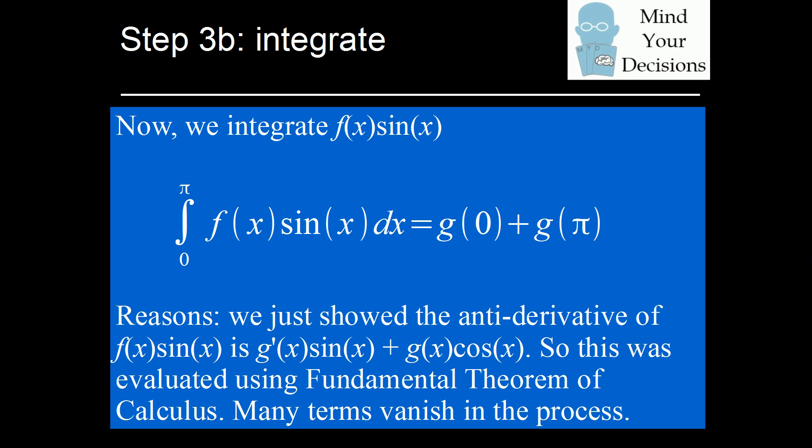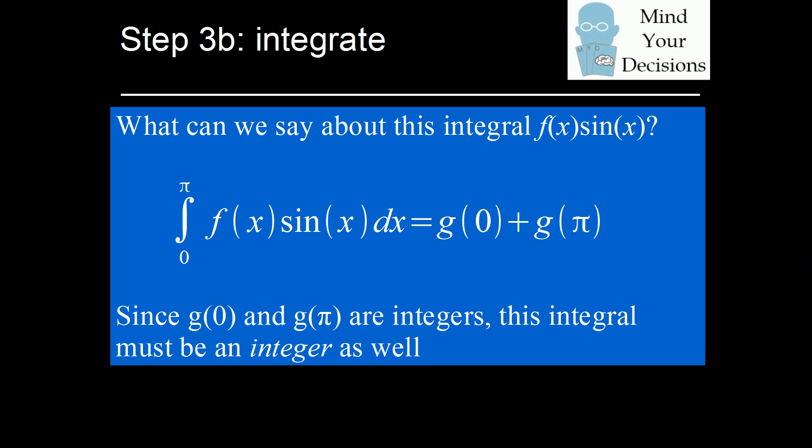So now we can integrate f of x sin x. We have the antiderivative, and we evaluate it at pi and subtract its value at zero. Skipping the algebra, the integral of f of x sin x from zero to pi equals g of zero plus g of pi. This is a compact result. Since we just showed that g of zero and g of pi are integers, we have proven that this integral of f of x sin x from zero to pi is also an integer.